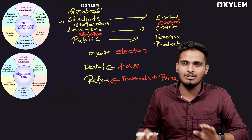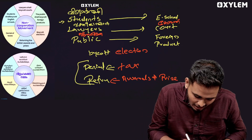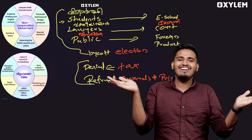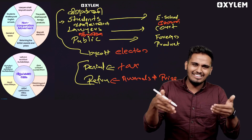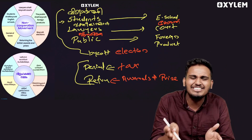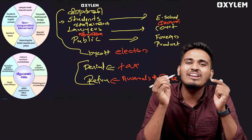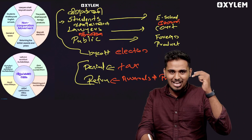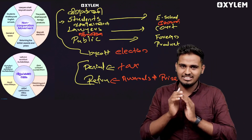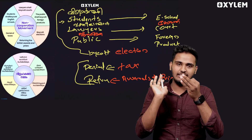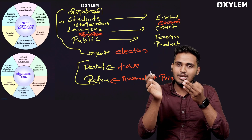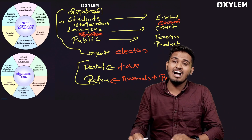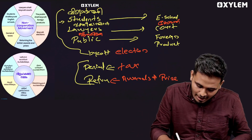Denial and taxes are returned — awards and prizes. This is a team, so simple! Students are lawyers and public. Boycott elections. This is the 3rd and the boycott. Denial and the return of awards and prizes — that's why I have to say this.